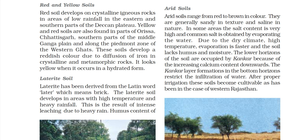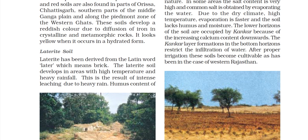The next soil is arid soil. Arid soils range from red to brown in color. They are generally sandy in texture and saline in nature. Some areas have very high salt content, and common salt is obtained when water evaporates. Due to the dry climate, there is high temperature, evaporation is very fast, and the soil lacks humus and moisture. The lower horizon of soil is occupied by kanker because of increasing calcium content downwards.